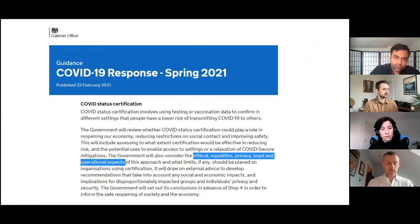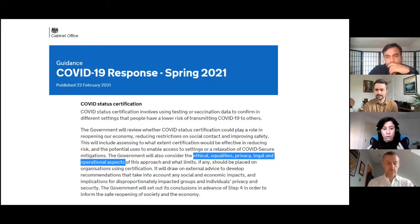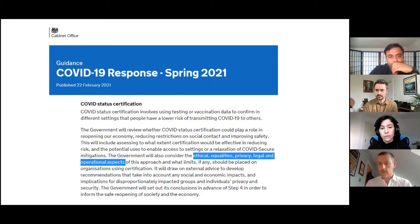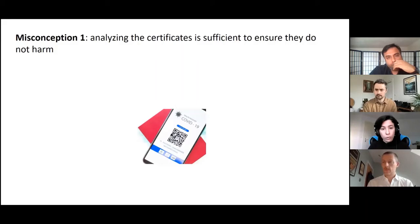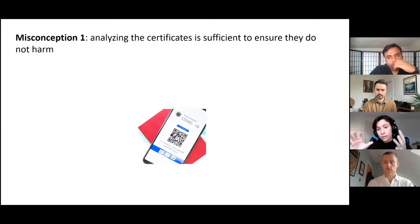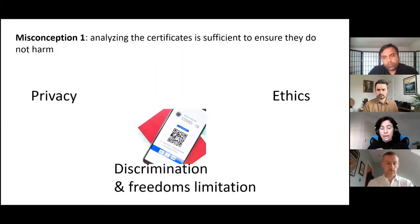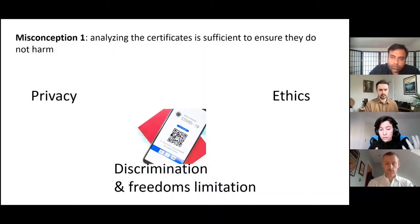When people hear about certificates being digital, they mostly imagine they're going to come in an app, as a QR code, a barcode, or something machine-readable. The concerns that typically come up around harms are: is privacy covered? Is discrimination covered? Are there going to be limitations on individual freedoms and rights? The first thing I want to point out is that from a technical perspective, when we're deploying infrastructure, all of these aspects are many sides of the same coin.